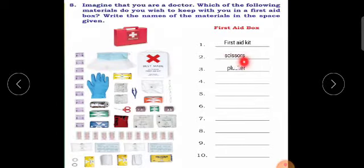Next is scissors. We want scissors to cut bandages. Next is plucker. If we have any needle or thorn in our leg or any other part of the body, to remove that we want plucker.